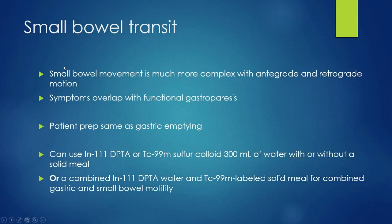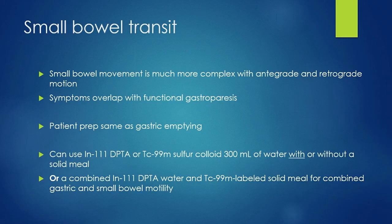Moving down the gut to small bowel transit. Small bowel transit is much more complex — the contents move back and forth and swirl around, making following a leading edge difficult without imaging multiple times over a long period. Symptoms of decreased small bowel transit are similar to functional gastroparesis, so in patients with a normal gastric emptying study, small bowel transit may help elucidate their symptoms. Patient prep is the same as for gastric emptying.